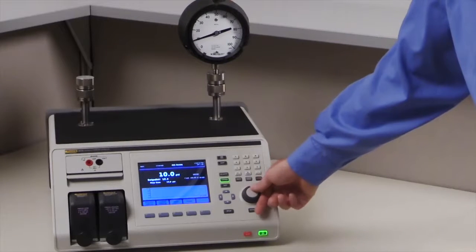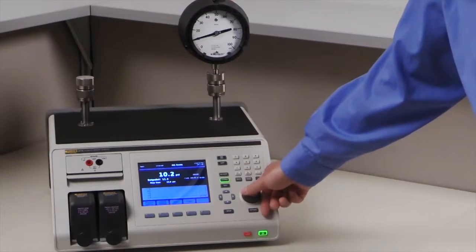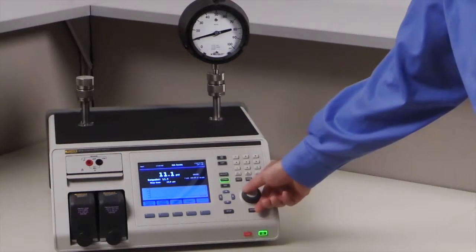When testing an analog gauge, you can easily jog the pressure by using the rotary wheel on the front panel.